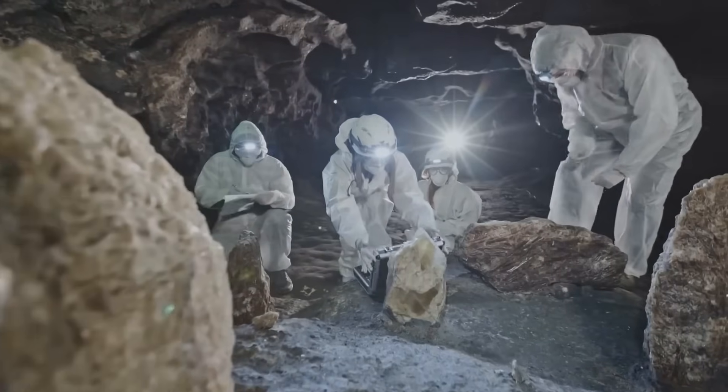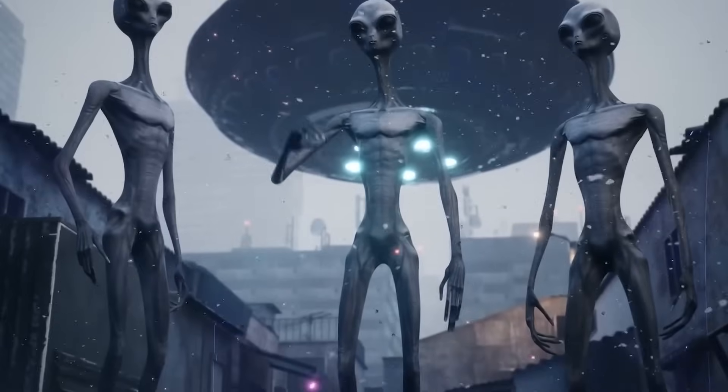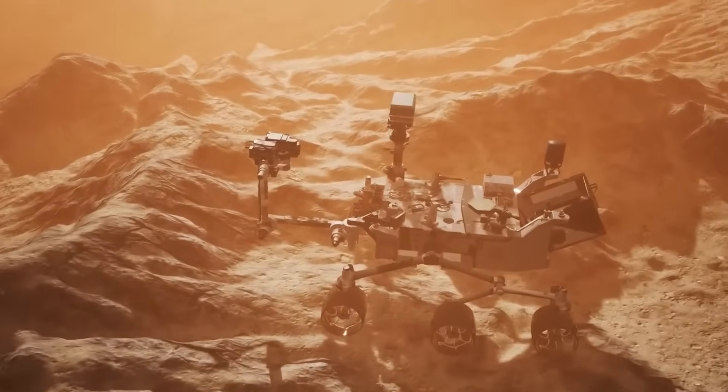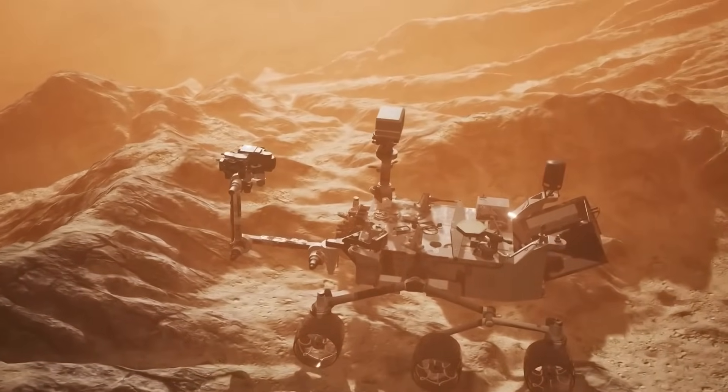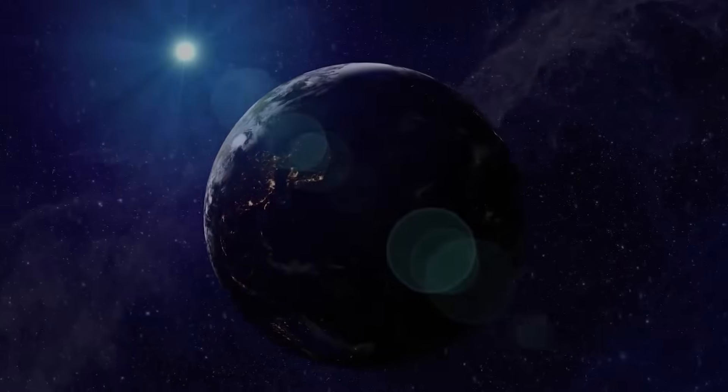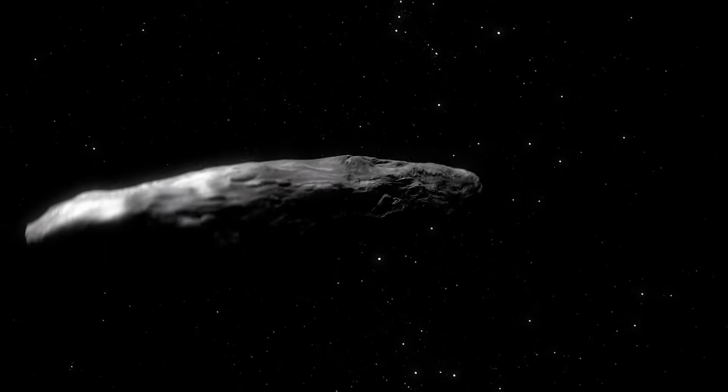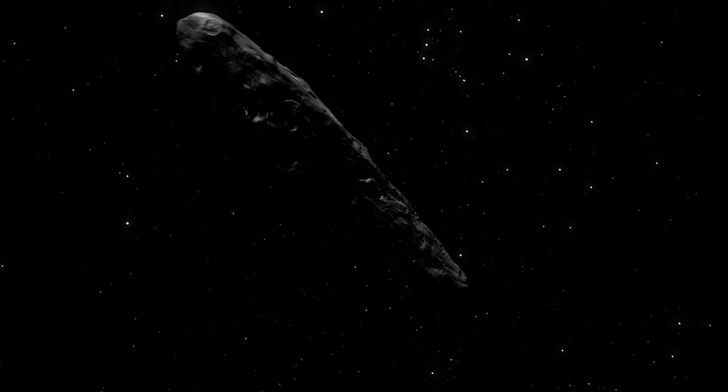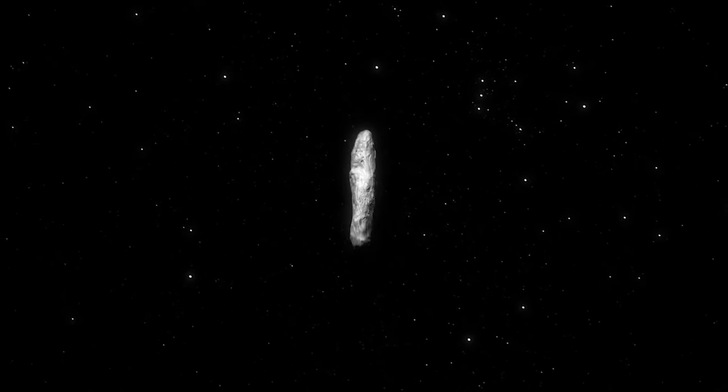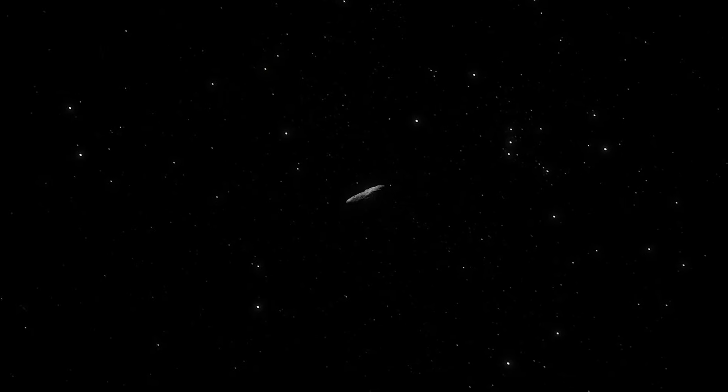Several celestial objects have been located in the vicinity of our solar system, but recently an unexpected visitor has made its appearance again. This visitor, named Oumuamua, entered our solar system from a location beyond the stars in 2017 and has sparked great interest among astronomers globally.